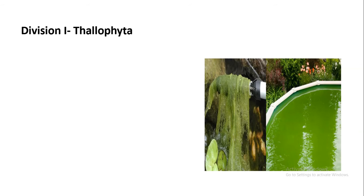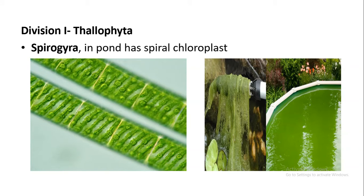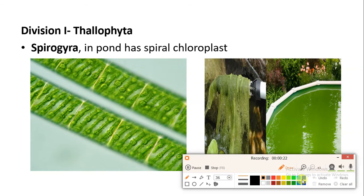You have seen some green growth in pond water, which is like a filamentous thread. This is how the structure looks like, and actually it is a Spirogyra.